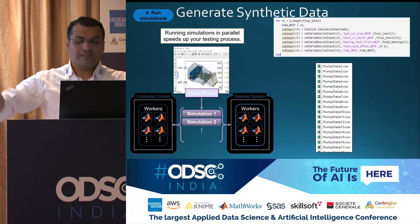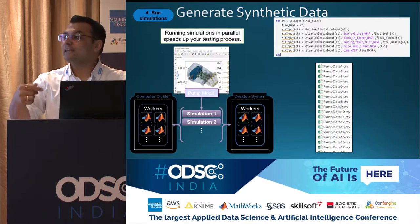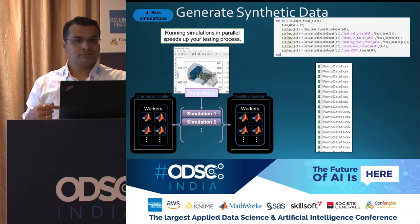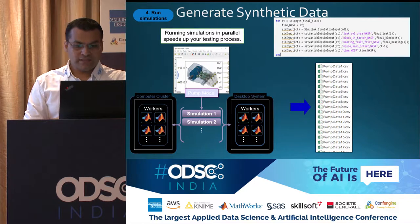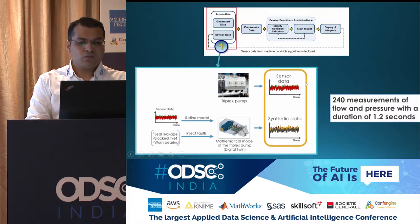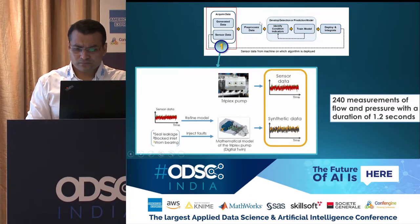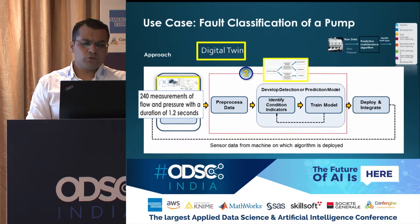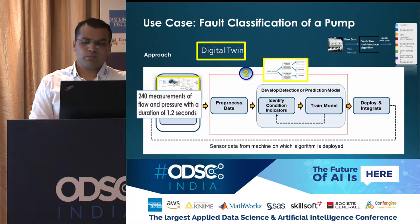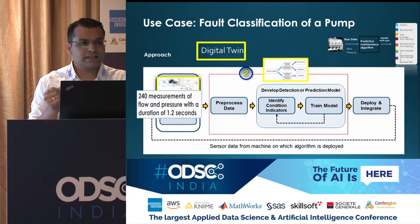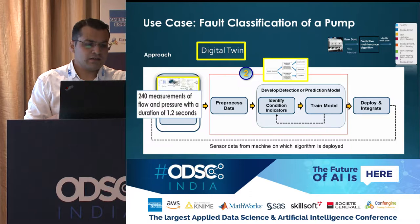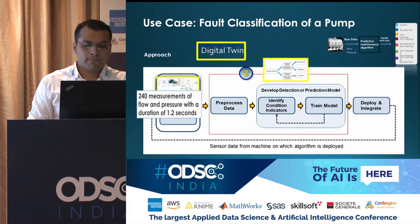This synthetic data can be added to your healthy operational data. So what I do next is I add whatever sensor data I have with the synthetic data, and then this is ready for the next step. I have here 240 measurements, measurements at every millisecond, so 1200 readings and 240 measurements.